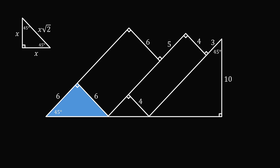This is another 45-45-90 right triangle. So this leg is also equal to 4, and this hypotenuse will be equal to 4 root 2. Finally, we have a final 45-45-90 right triangle, so the other leg is equal to 10.